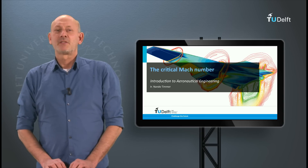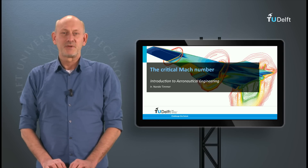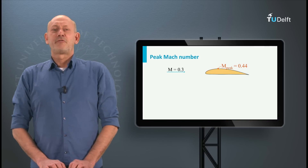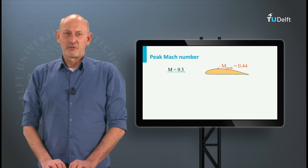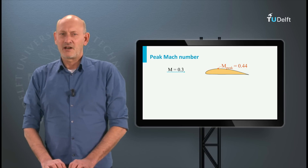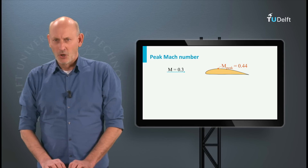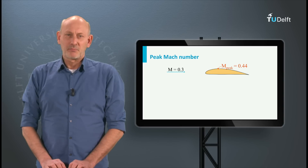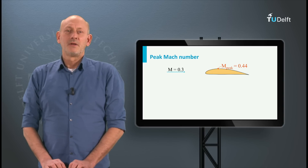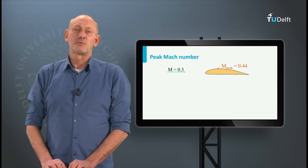We know that the velocity on the suction side of an airfoil at a moderate angle of attack is higher than the speed of the incoming flow. As an example, here you can see an airfoil moving through air with a Mach number of 0.3 at a certain angle of attack. The flow velocity over the airfoil suction side increases, and at some point the maximum velocity — or the highest local Mach number, or in other terms the minimum pressure coefficient Cp — is reached. In this example, at this angle, this is for a Mach number of 0.44 and a Cp of around minus 1.7.